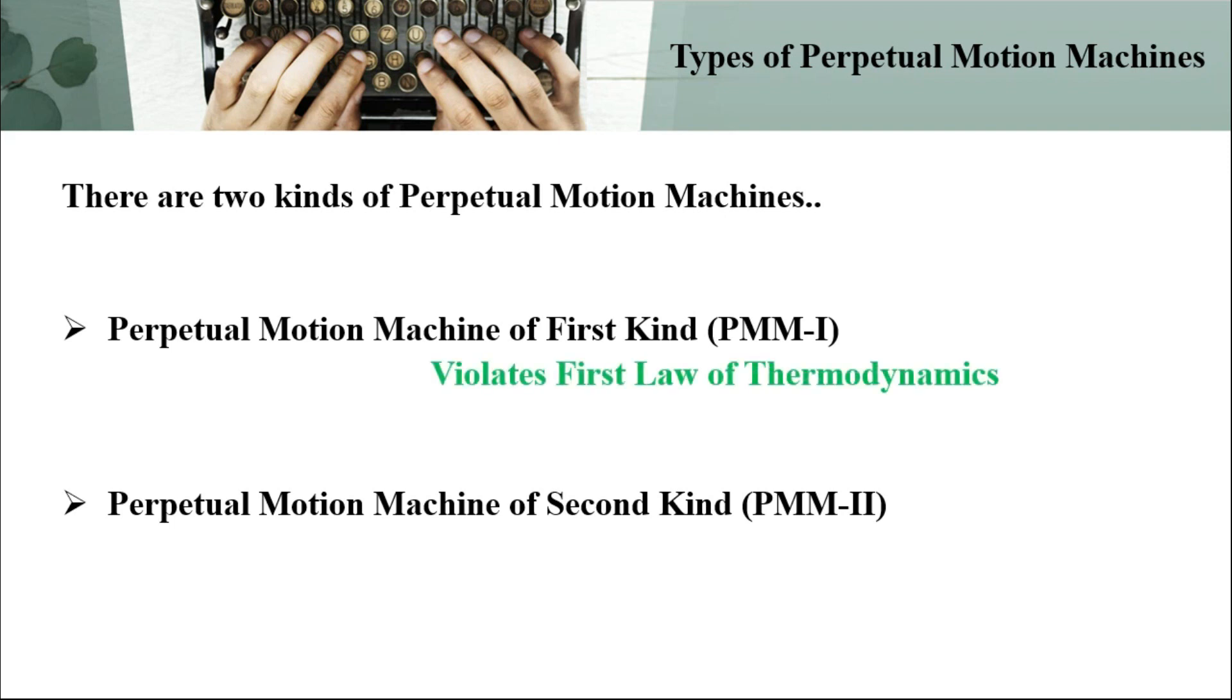PMM-I violates the first law of thermodynamics, whereas PMM-II violates the second law of thermodynamics. That is, Kelvin-Planck's statement of the second law of thermodynamics is violated by PMM-II.